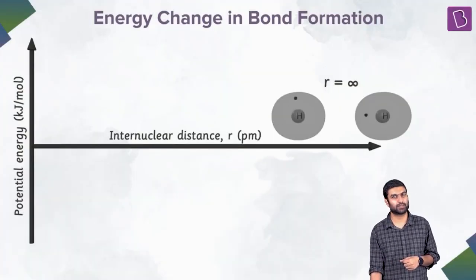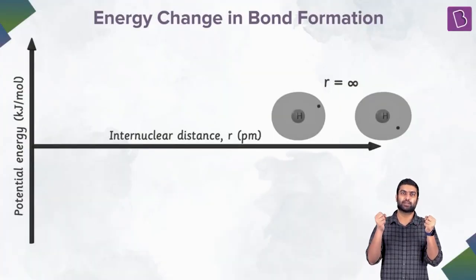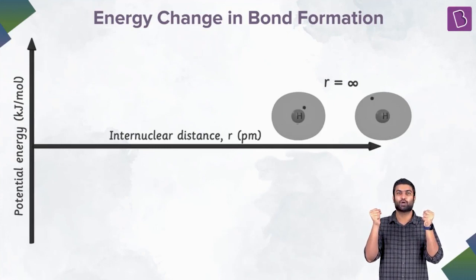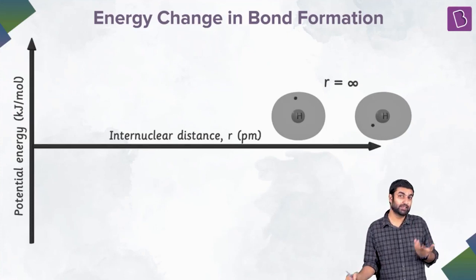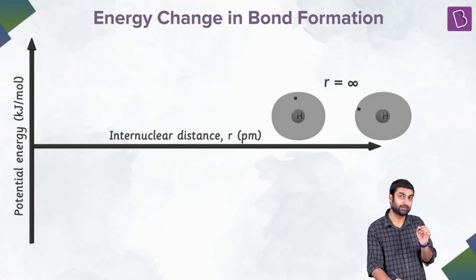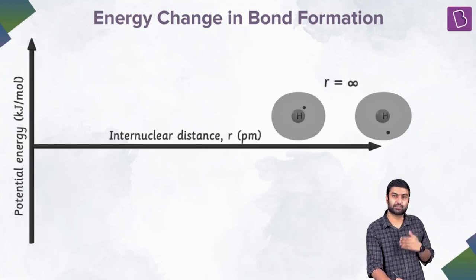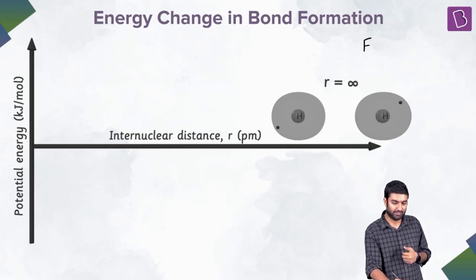We consider these two hydrogen atoms starting at a place where they are not experiencing any force because of each other. If they are not experiencing any force on each other, theoretically we know that force equals k·q₁·q₂/r².